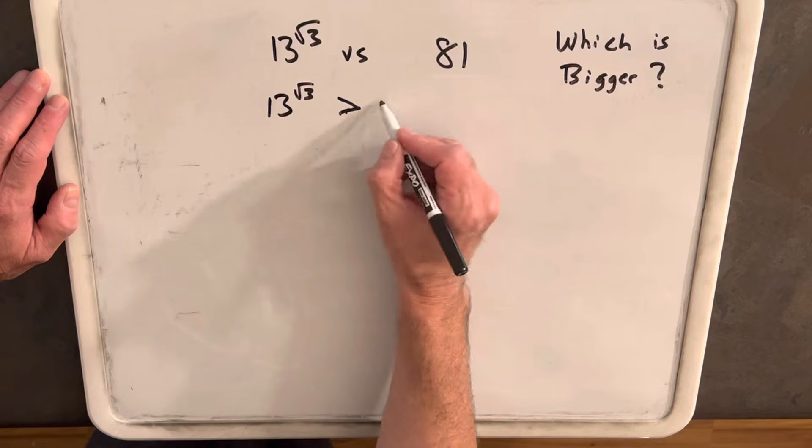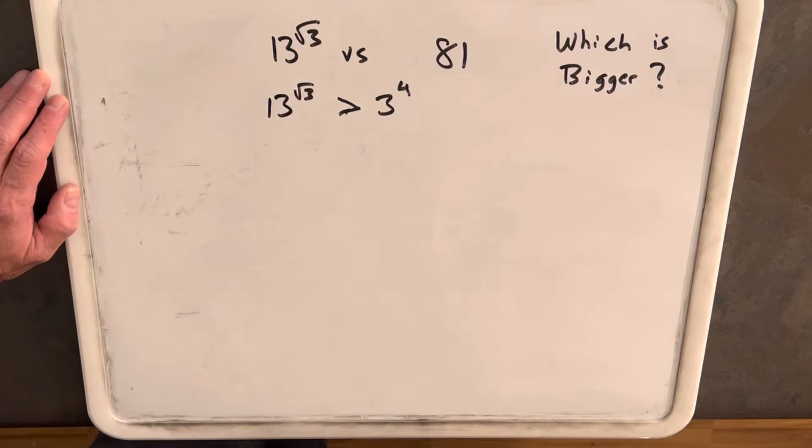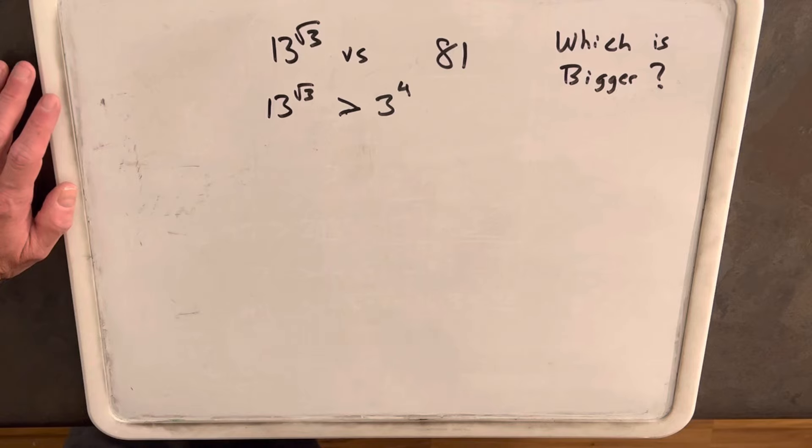And we'll rewrite 81 as 3 to the 4th. I think the base 3 is going to be easier to deal with than 81.